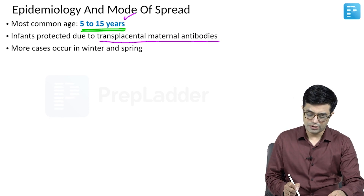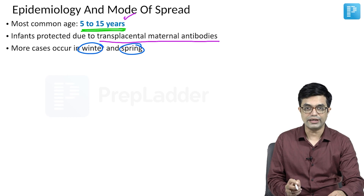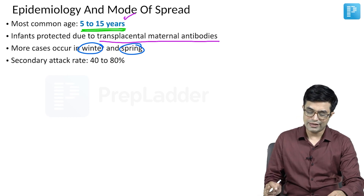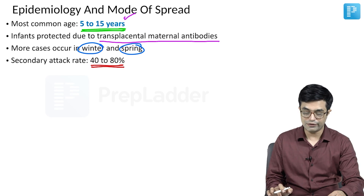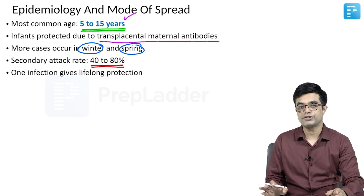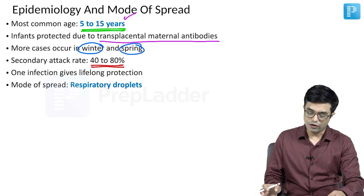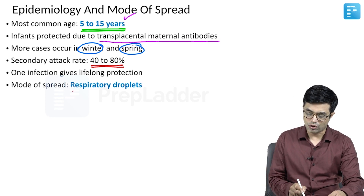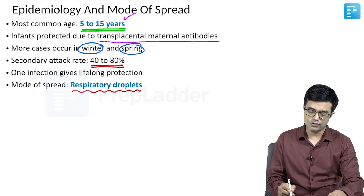More cases tend to occur in the winter and spring seasons, especially in the Indian subcontinent. The secondary attack rate of mumps virus is high, at 40 to 80 percent. However, one infection gives lifelong protection. The mode of spread is respiratory droplets, and it can also be spread through the fomite route.